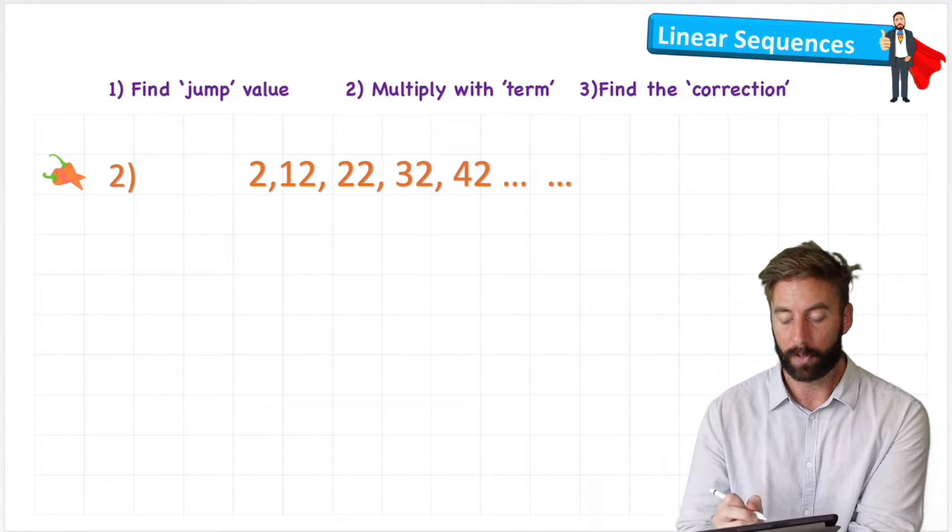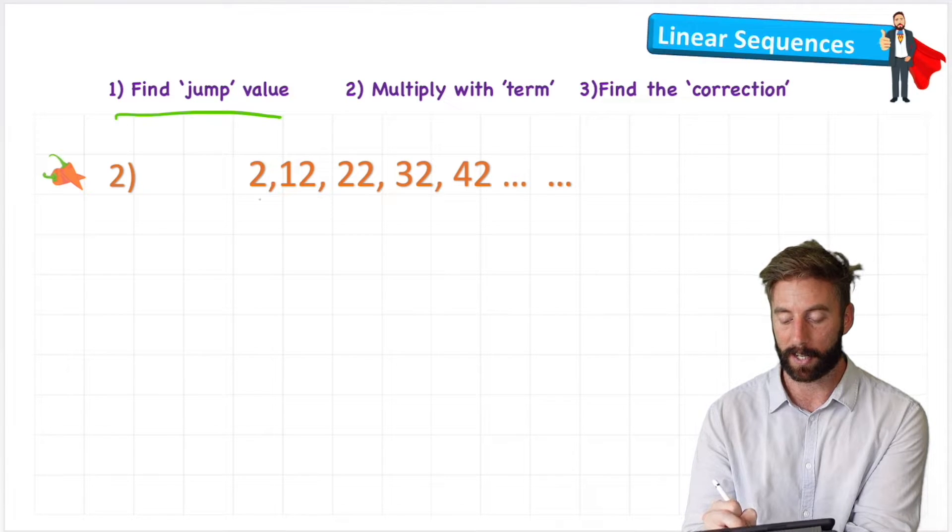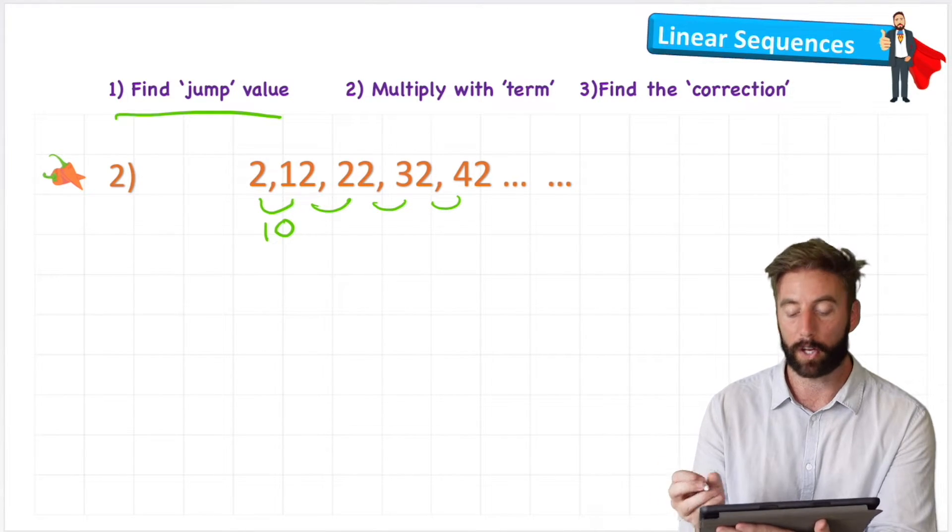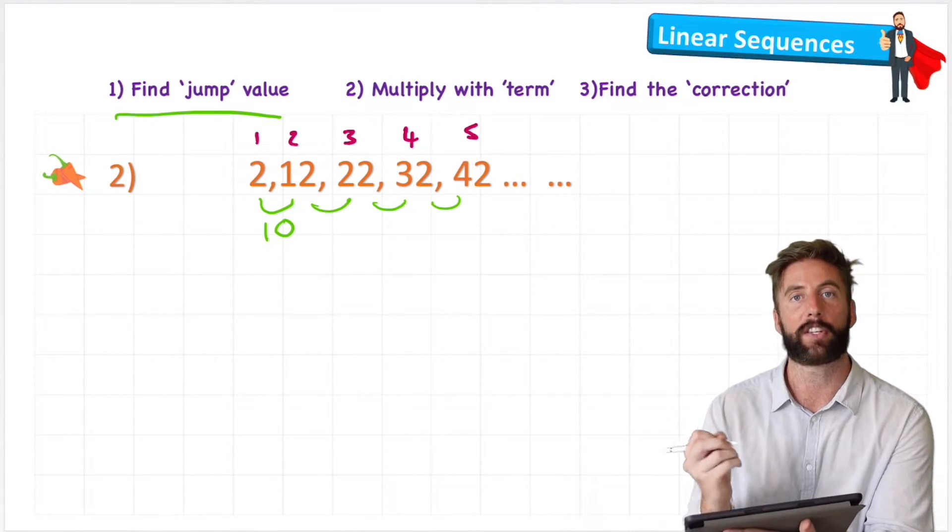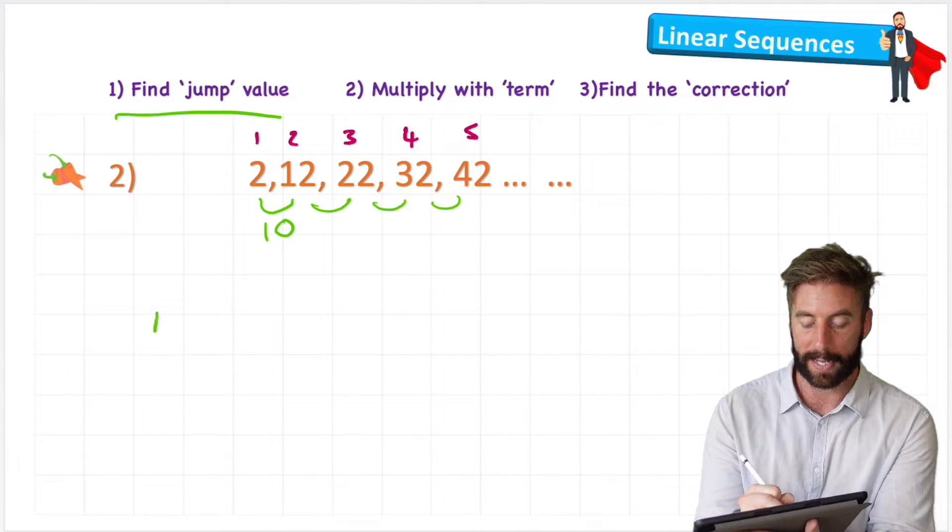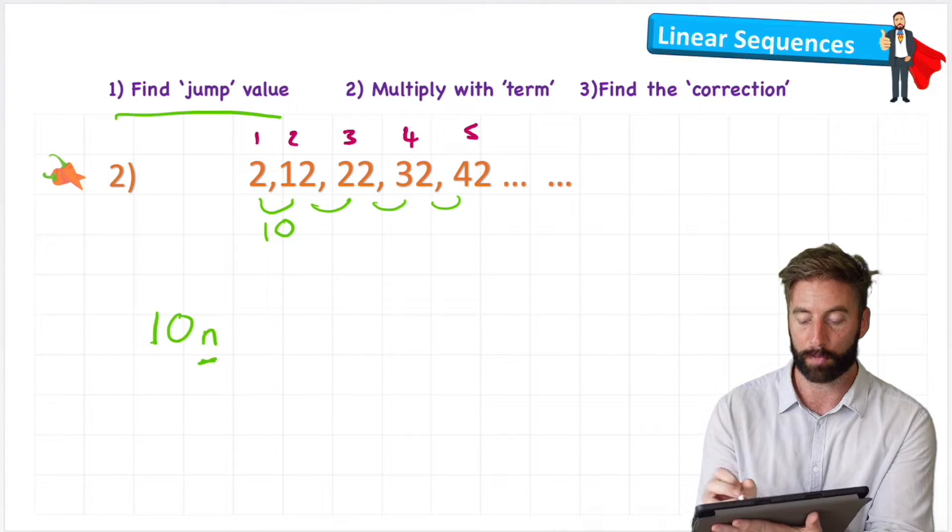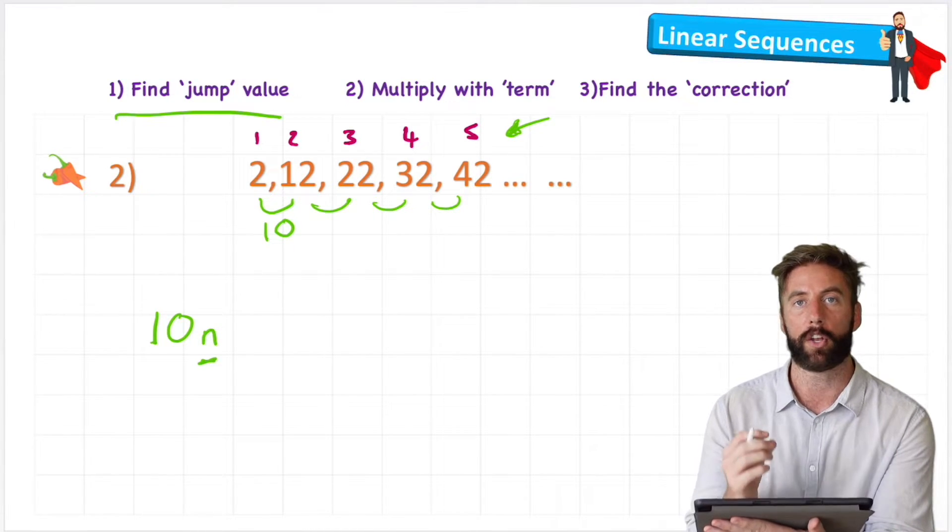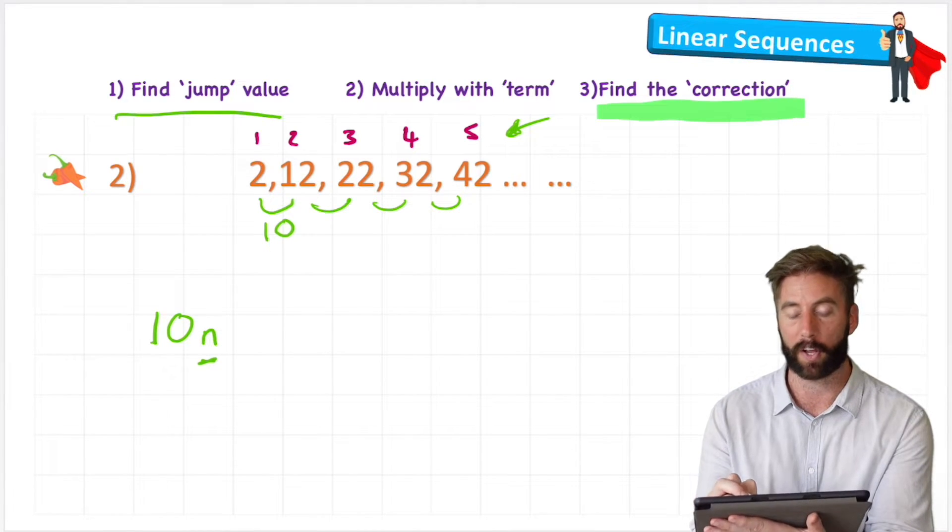Let's look at a harder one. So the first thing I need to do again is find the jump value. So I can see this time the gap is 10. Next, what I can do is finish off my table by putting the numbers of the terms on the top. And then to start my formula, I will write 10n, remembering that this n just means the position of the term, the number of the term that we're looking for.